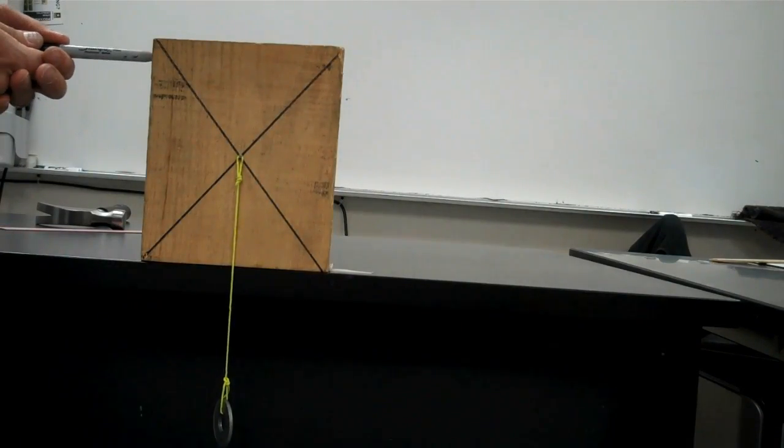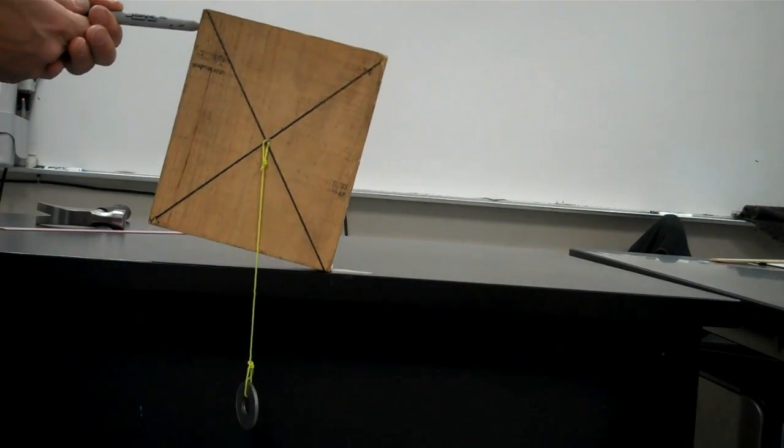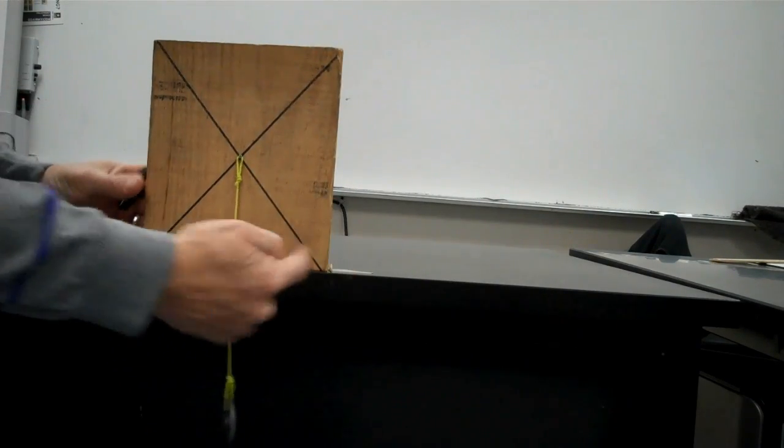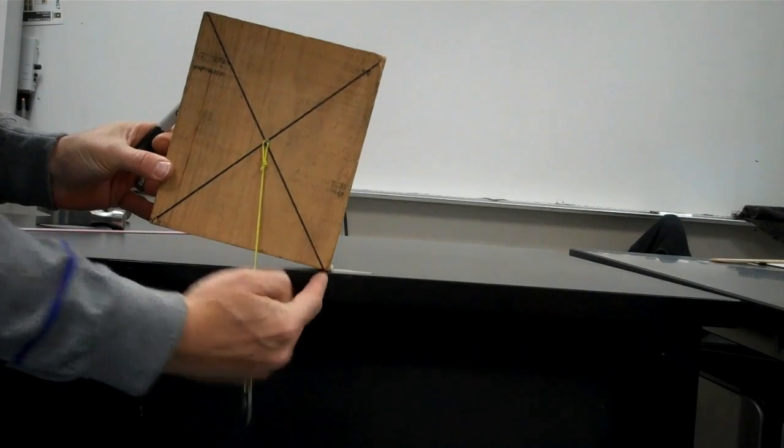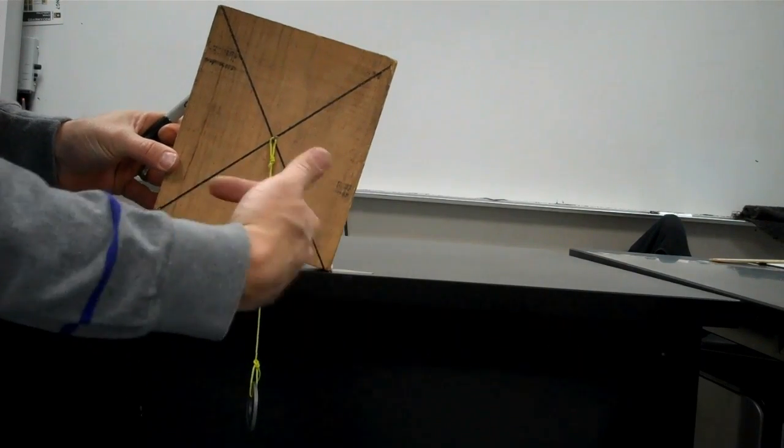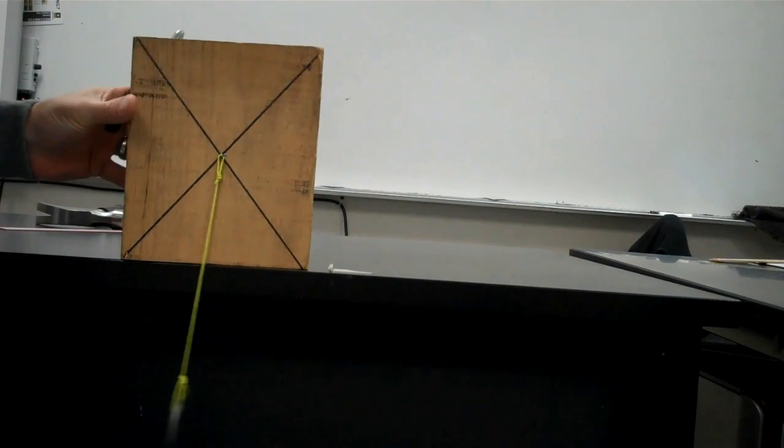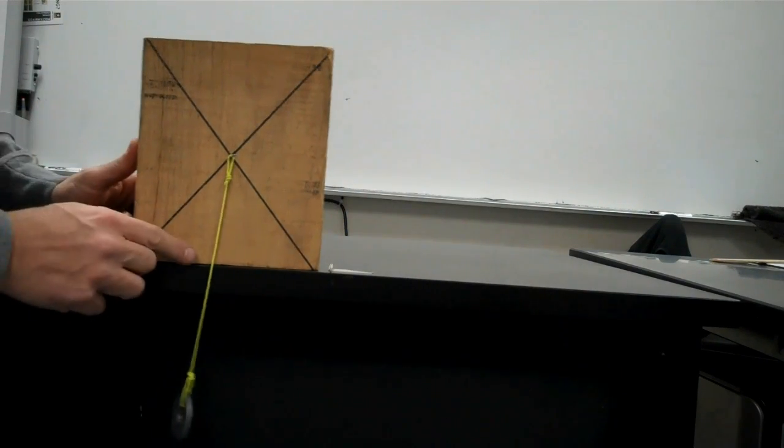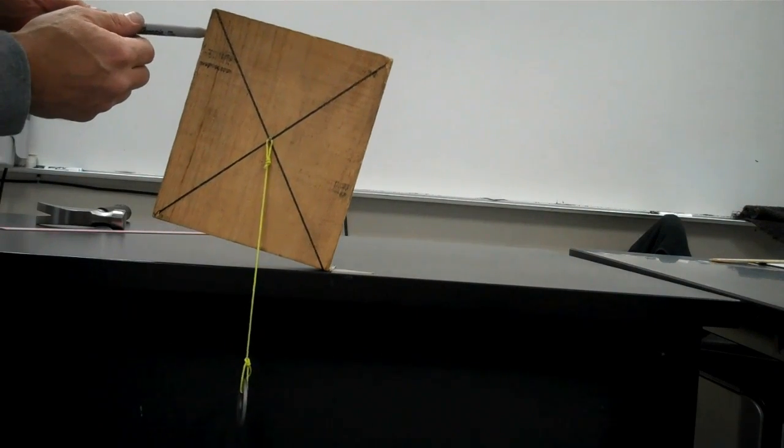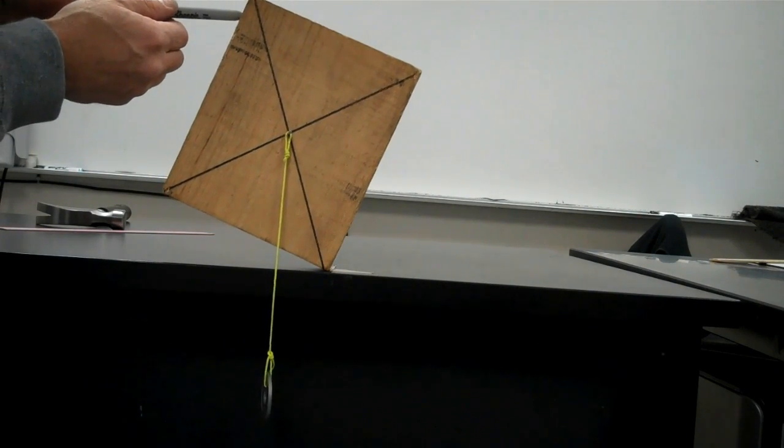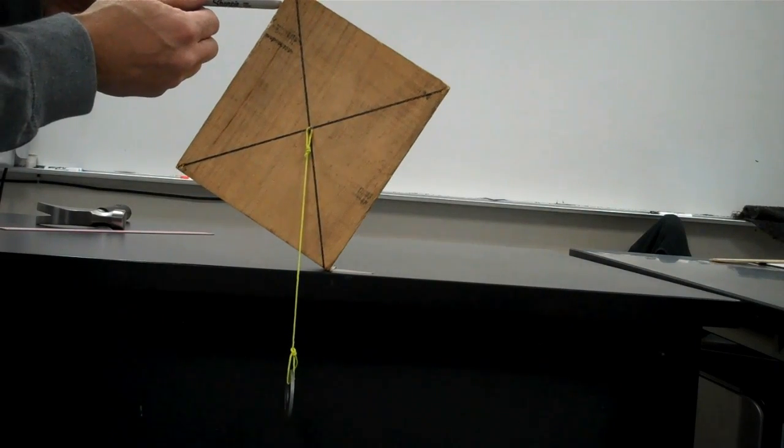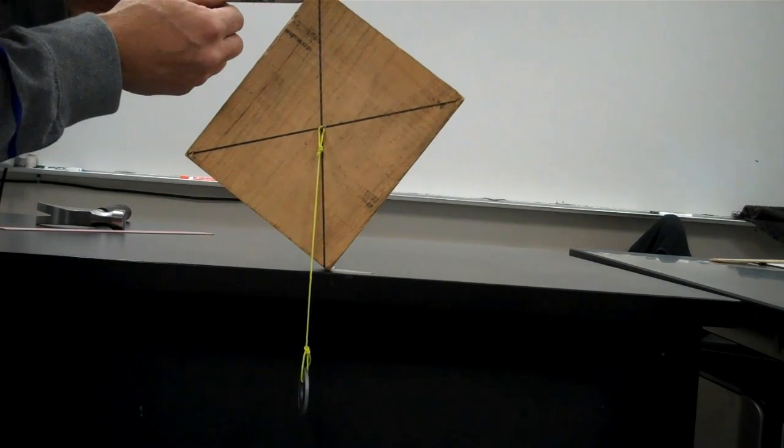If I take the block and tip it, as long as the center of mass stays on this side of the support point, right here where the block is touching the table, the block is going to continue to fall to that side. I'll keep tipping it until you notice that as soon as the string passes onto the other side of the support point, that's when the block will tip over.